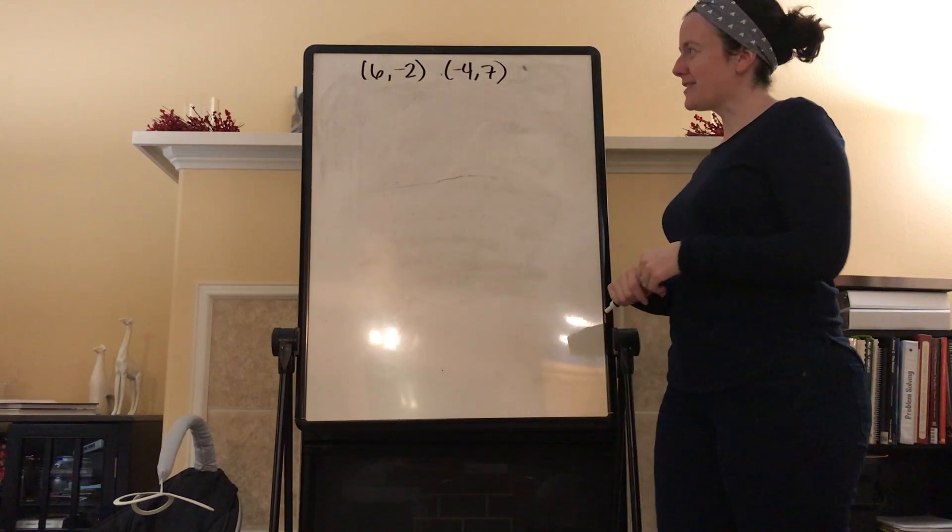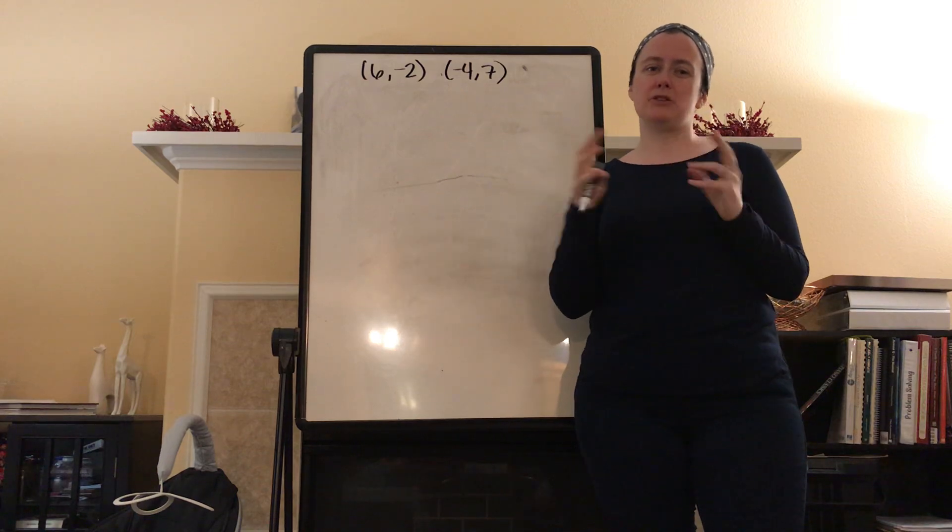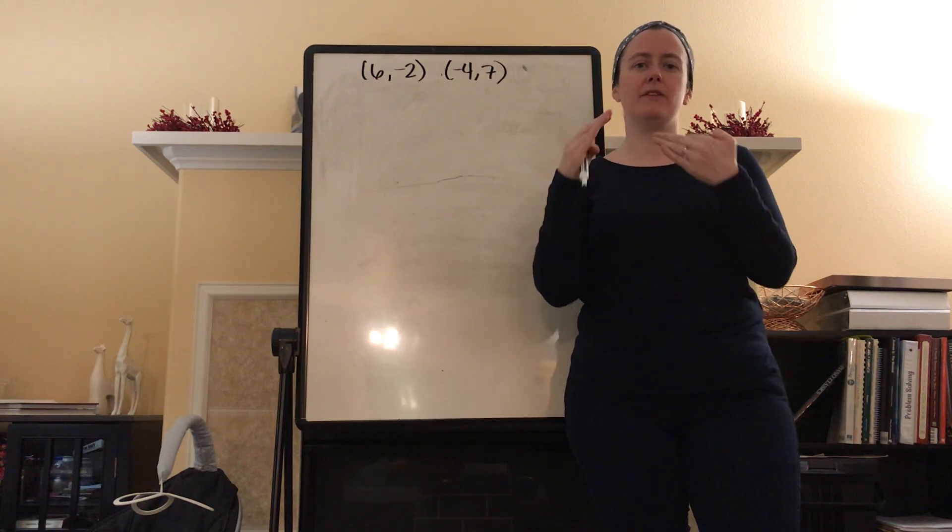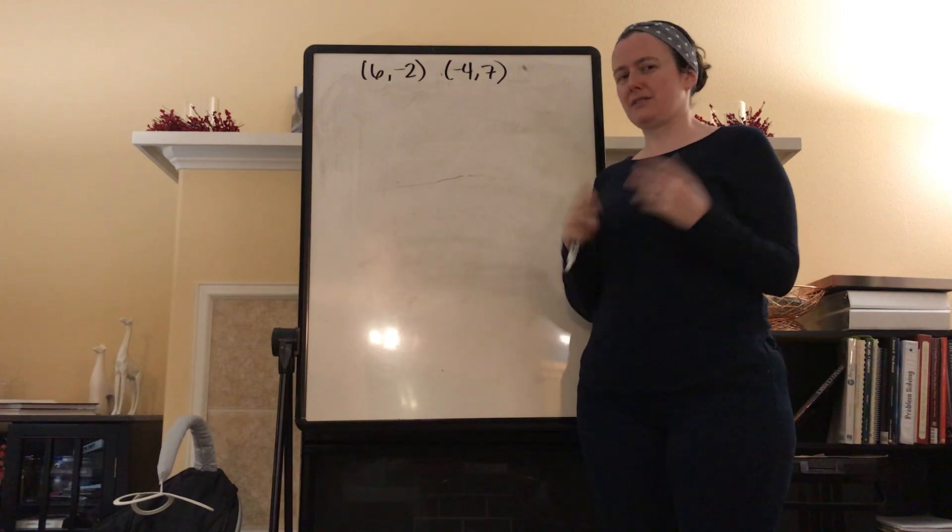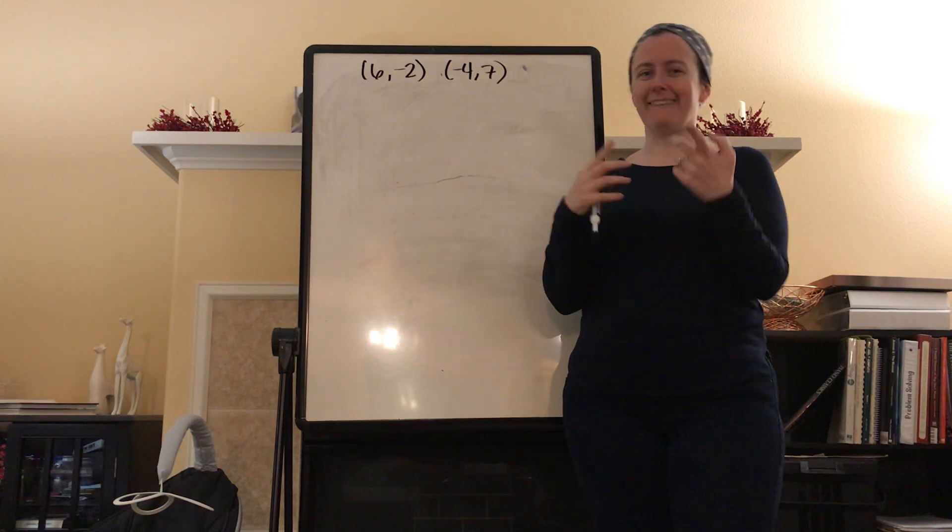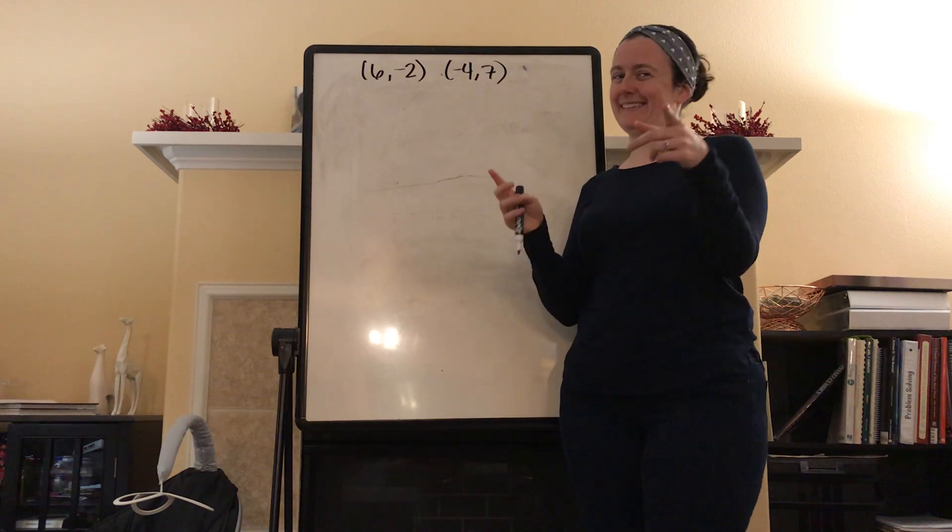Today we're going to talk about how to find the distance and the midpoint between two points. So the distance between them and then the midpoint, the point that's in between those two points. It's called the midpoint because it's the point in the middle. Middle point, midpoint.